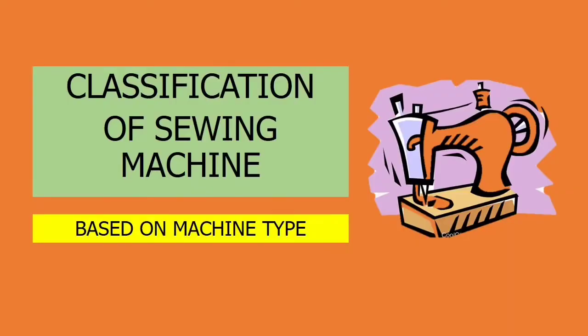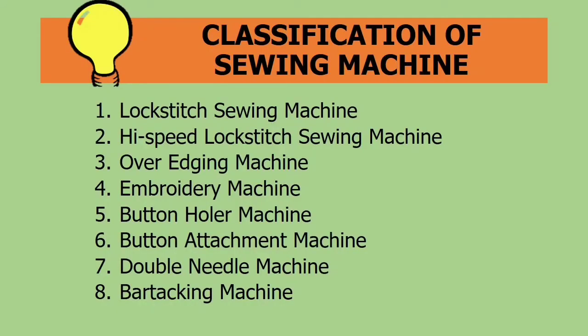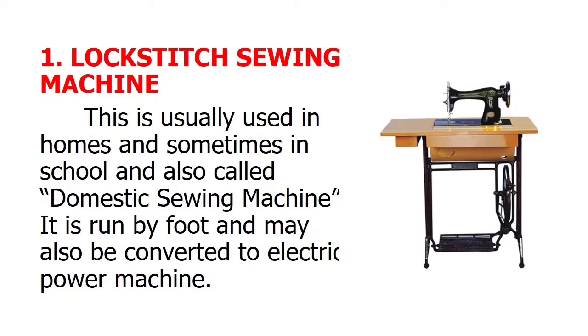At this juncture, we will discuss the classification of sewing machines based on machine type. We have 8: lock-stitch sewing machine, high-speed lock-stitch sewing machine, over-edging machine, embroidery machine, button-holer machine, button-attachment machine, double-needle machine, and bar-tacking machine. The lock-stitch sewing machine is usually used in homes and sometimes in school, also called a domestic sewing machine. It is run by foot and may also be converted to an electric power machine.